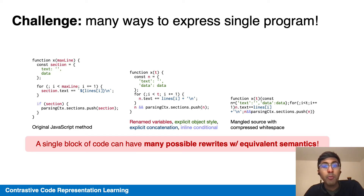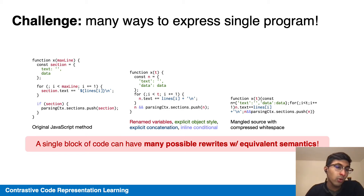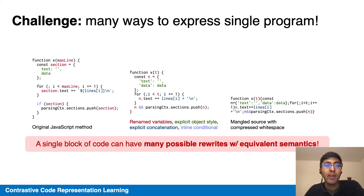Some approaches use abstract syntax trees to attempt to normalize some of these variations. However, many changes, like algorithmic ones, alter the AST. Some changes that would also alter the AST include switching from variable interpolation in the string to concatenation, and converting an if statement into a single line conditional.